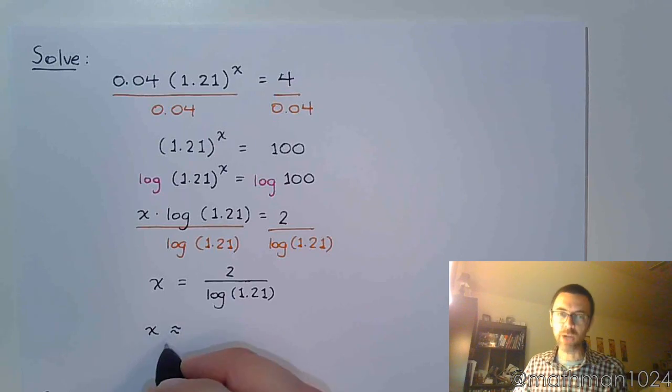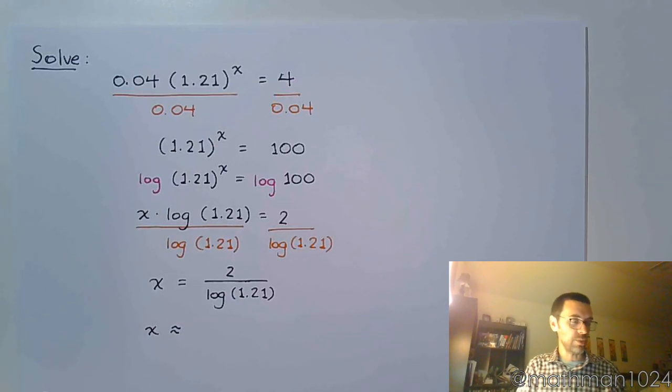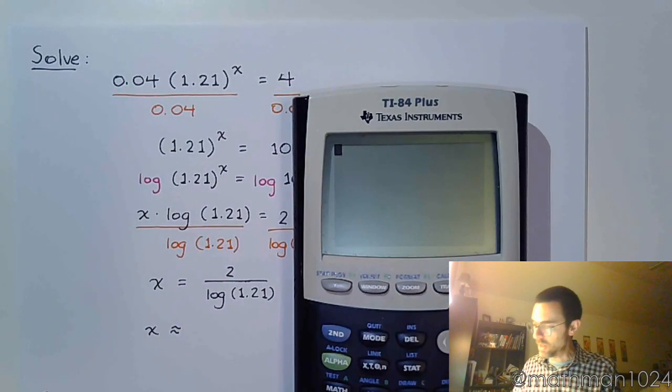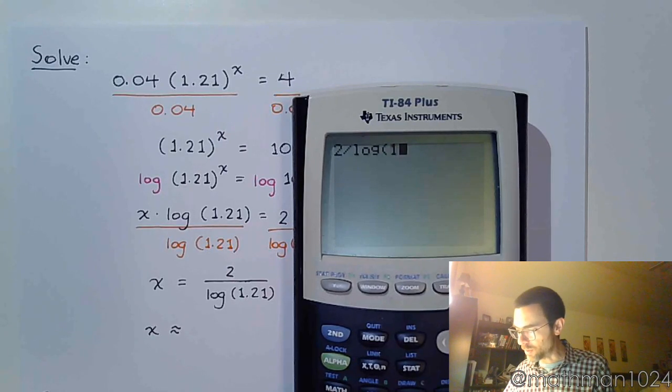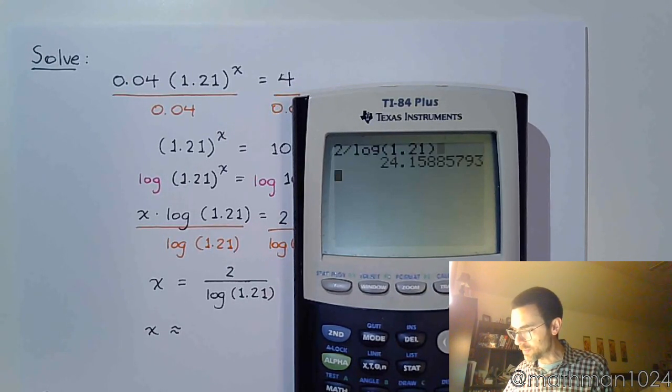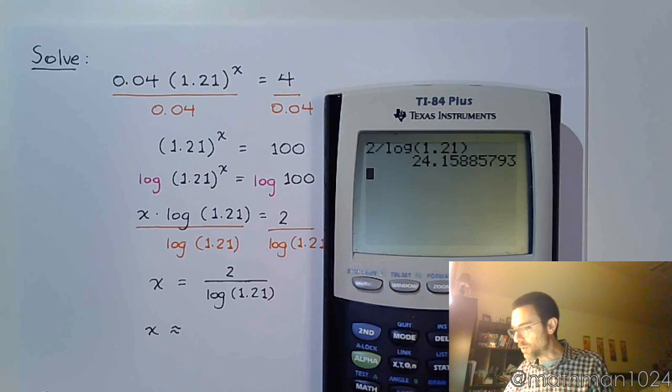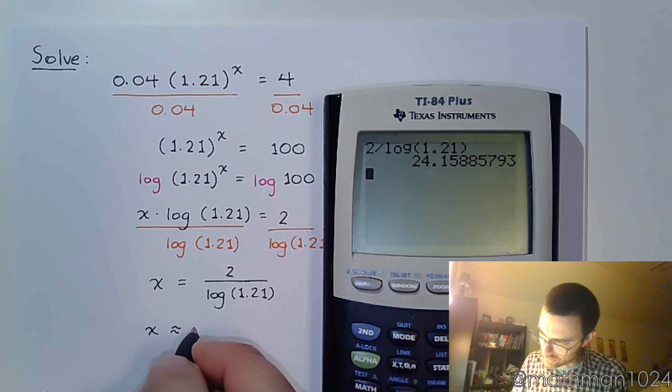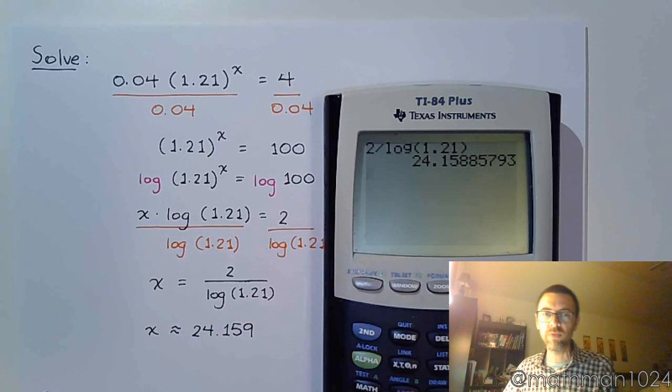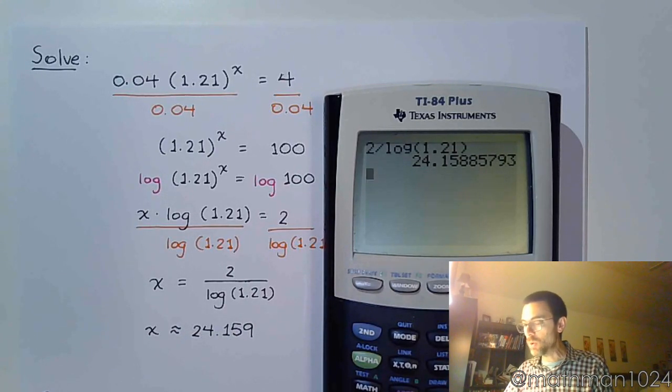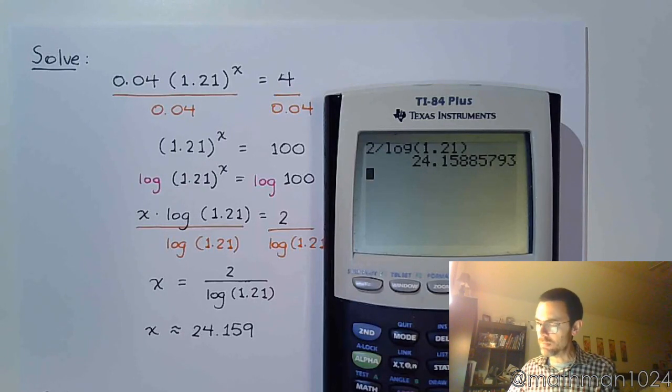But what is my approximation? We've been doing these and rounding them to the nearest thousandth, so let's keep doing that. So 2 divided by the common log of 1.21. And we get 24.159. So 24.159. Cool. It wasn't too bad. At least I hope not.